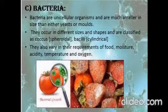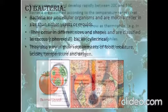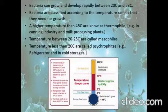Bacteria are the most widespread microorganisms found in food. They are minute single cells of various shapes. Those with spherical shapes are called cocci, those with cylindrical or rod shapes are called bacilli, and those with spiral or fibrous shapes are called spiral bacteria. Based on temperature, bacteria are classified as psychrophiles — cold-loving bacteria that grow at 10°C to 15°C, and even at 5°C.